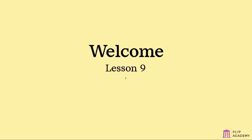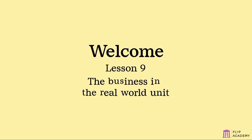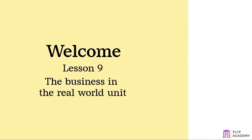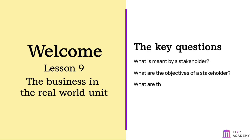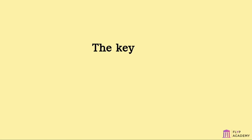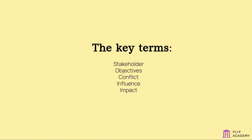Welcome to lesson nine of the business in the real world unit. In this unit the key questions are: what is meant by a stakeholder, what are the objectives of a stakeholder, and what are the impacts of a range of business decisions on stakeholders. These are the key terms — read through them carefully: stakeholder, objectives, conflict, influence, impact.